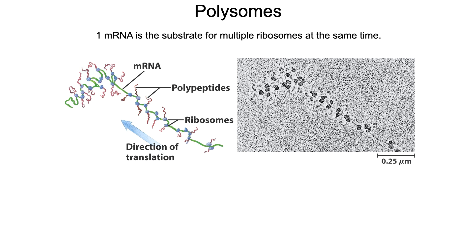A single messenger RNA is going to be the substrate for more than one ribosome at a time, producing what's called a polysome. As soon as a ribosome clears the start codon, another ribosome will bind, resulting in many proteins being made from a single messenger RNA simultaneously.